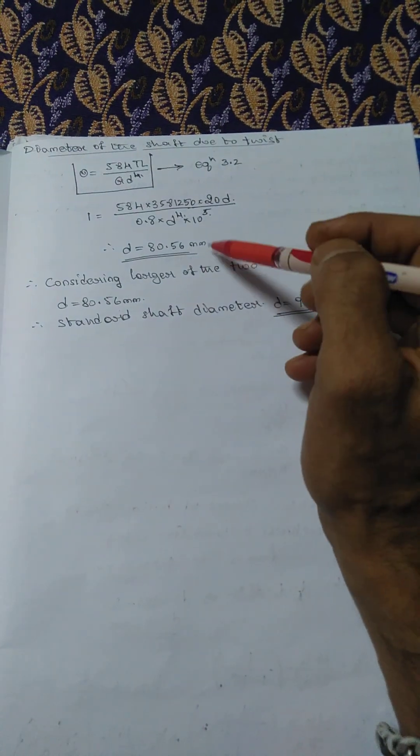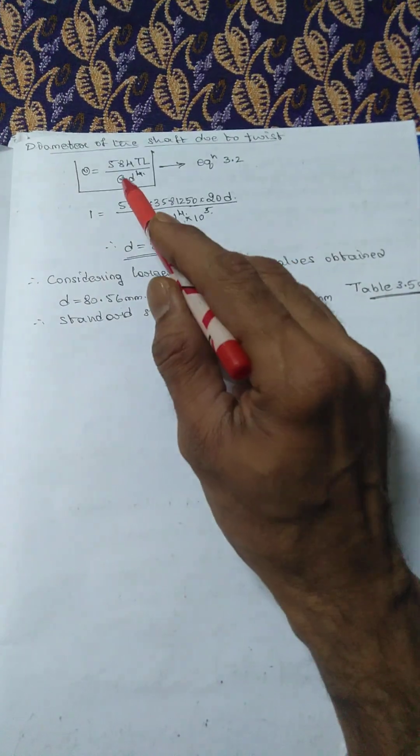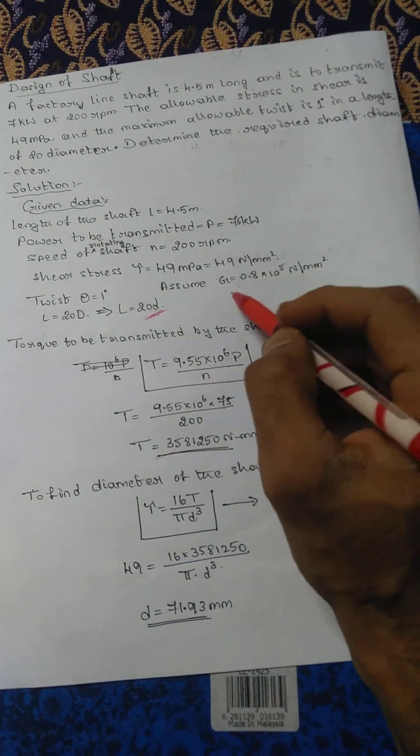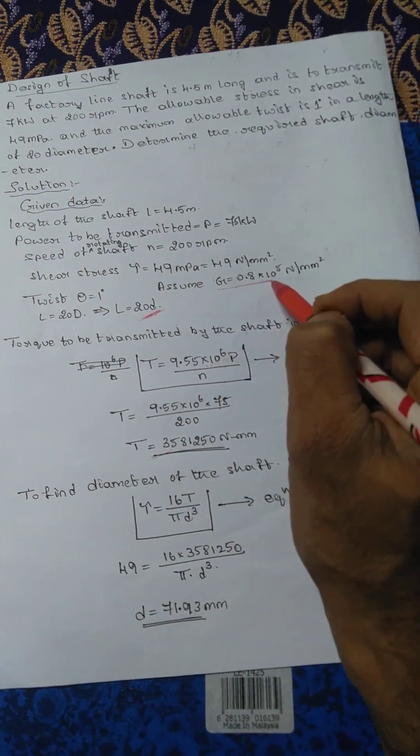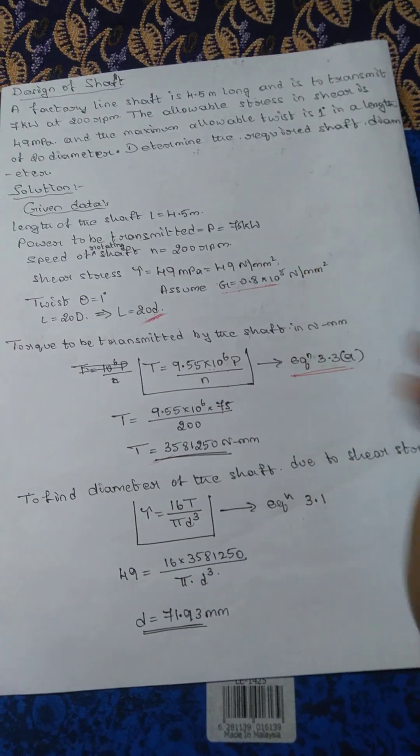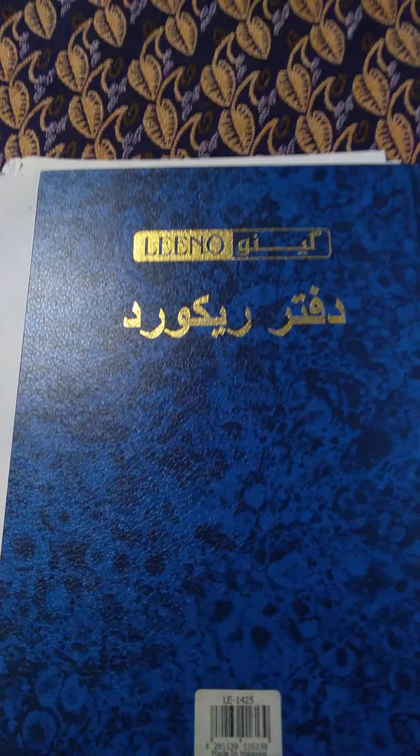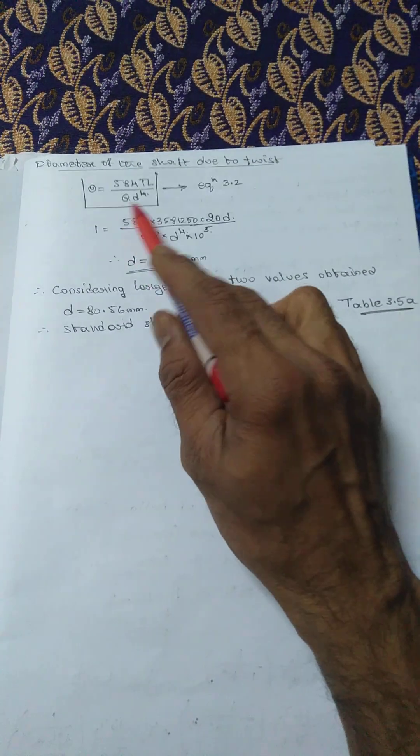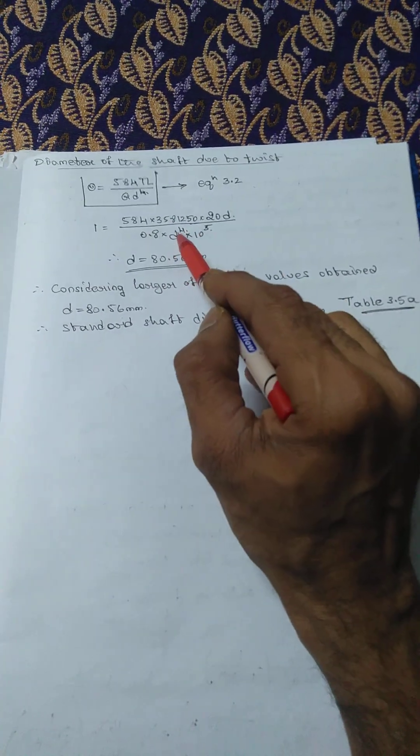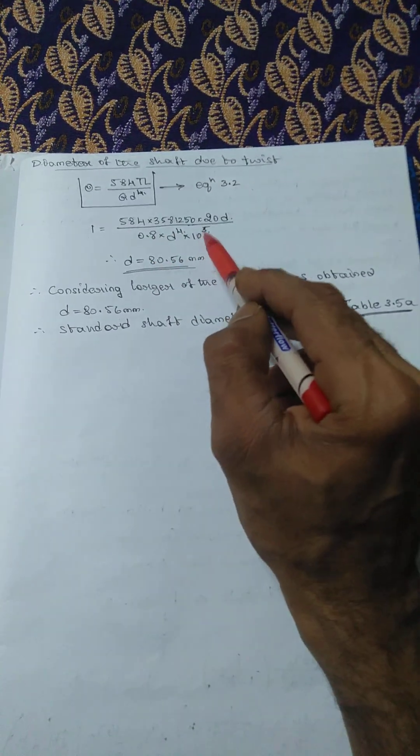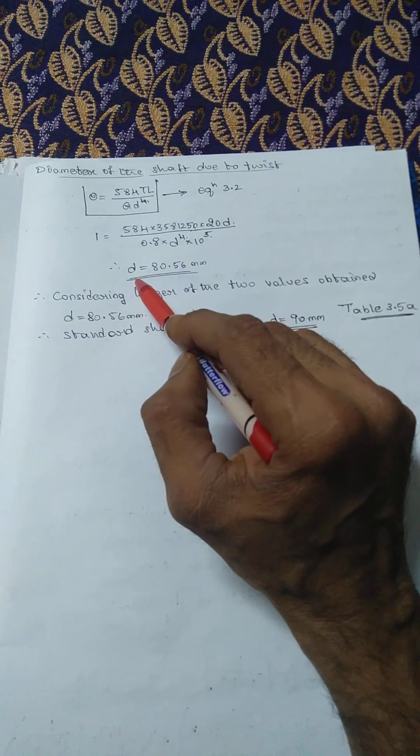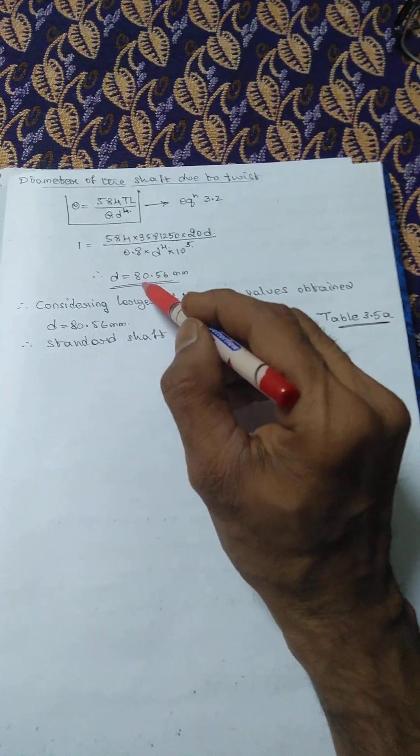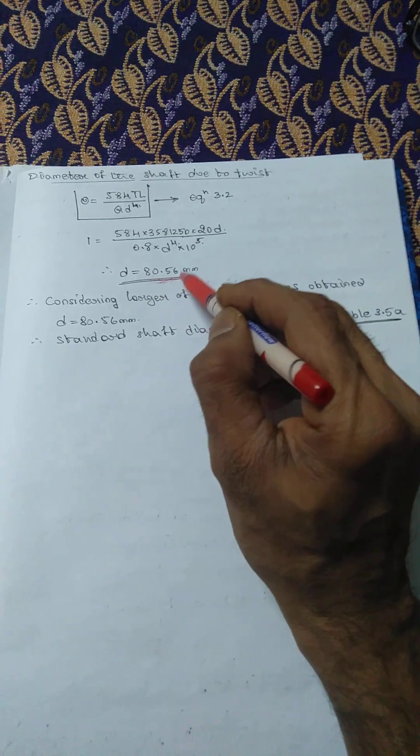Divided by G. G sometimes they will give, if they do not give we have to assume it as 0.8 times 10 to the power 5 newtons per millimeter square. Here G times D to the power 4, 0.8 times 10 to the power 5 times D to the power 4. We have to calculate the value of D, so we'll get D as 80.56 for twist.